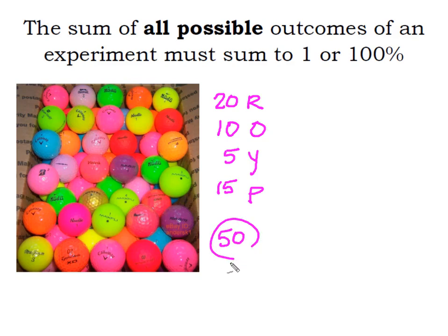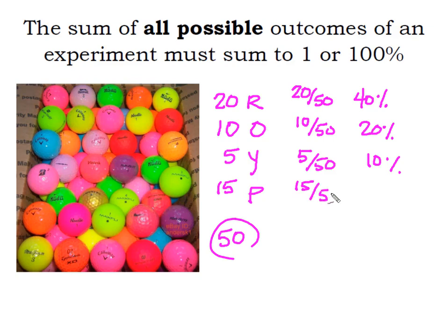So if I reach in and randomly select a golf ball, the probability of getting me a red is 20 out of 50, which is 40%. And the probability of me getting an orange one is 10 out of 50, which is 20%. The likelihood of me getting a yellow golf ball is just 5 out of 50, which is simply 10%. But I have 15 out of 50 probability of getting a pink, which is 30%.